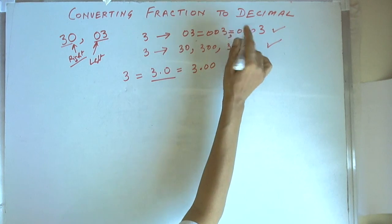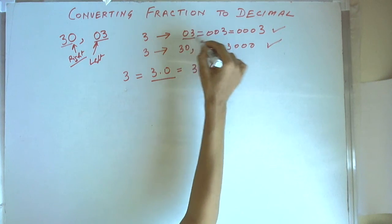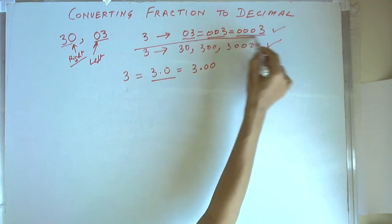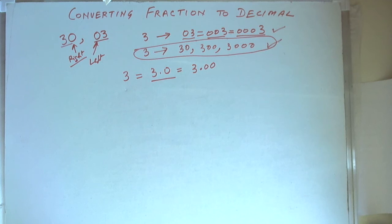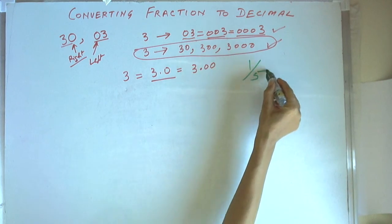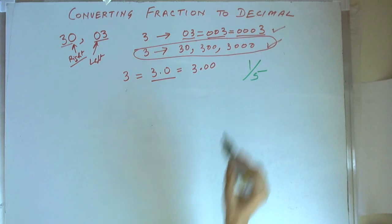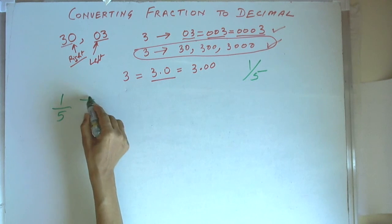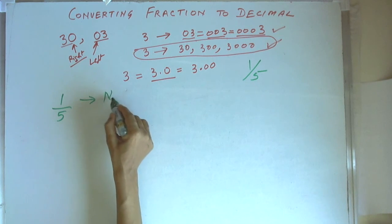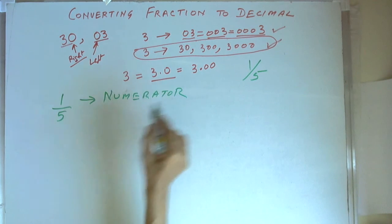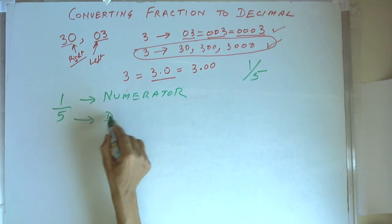So these are equal, but some are not equal — putting a 0 on the right hand side without a decimal point changes the value. Now, let us take a fraction 1 by 5. 1 is the numerator and 5 is the denominator.